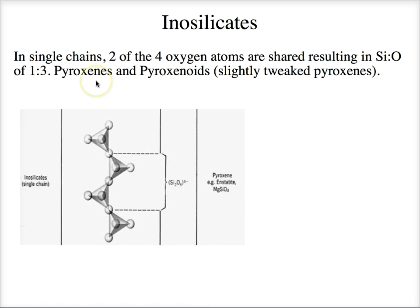It's not just pyroxenes in these single chains — there's also a group called the pyroxenoids. A pyroxenoid, as you'd imagine, is something very close to a pyroxene, kind of like how a feldspathoid is very close to a feldspar — a little different crystal structure, so we can't call it a pyroxene but it's close enough. The mineral wollastonite is one of these, found in skarn deposits where silica-rich fluids have gotten intimate with limestone.